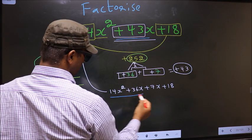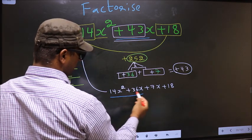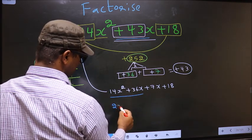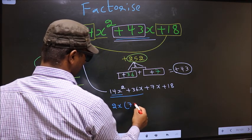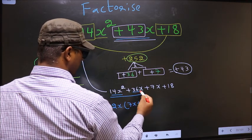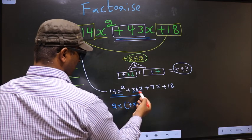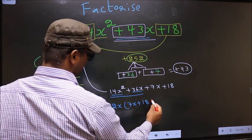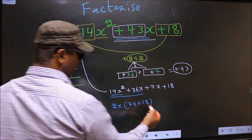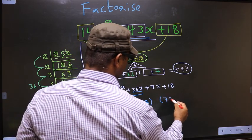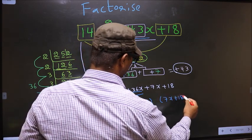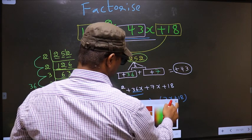Next. Now, from these two terms, what can be taken out common is 2x. So, here we get 7x + 18, from this, 2x gone out. Now, whatever we got here, here also we should get the same thing.